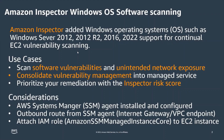Amazon Inspector added Windows operating system support for continuous EC2 vulnerability scanning, such as Windows Server 2012, 2012 R2, 2016, and 2022. This feature is available globally across 19 commercial regions. You can visit the AWS regional services list for details.